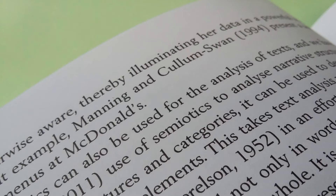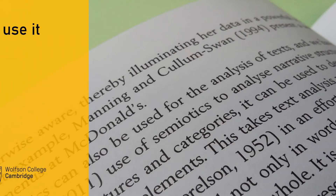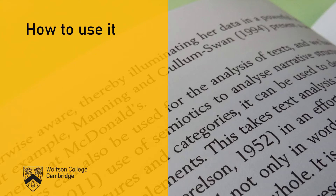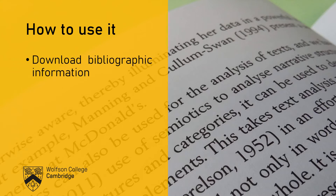A big question many people have is: how do I use it? How do I get things into my library? The first thing is about downloading information — this is the bibliographic information: the author, the title, the date of publication, which edition it is if it's a book, or which page numbers if it's a journal article. And there are lots and lots of different ways to download things.